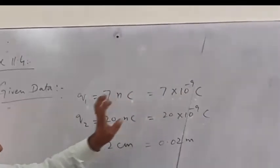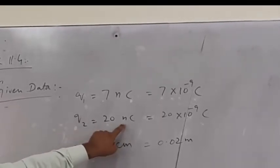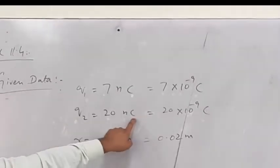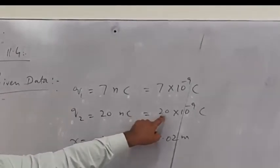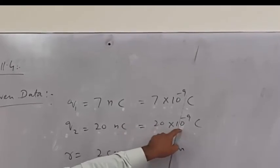Second charge Q2 is 20 nano coulomb, so we have 20 × 10^-9 coulomb.